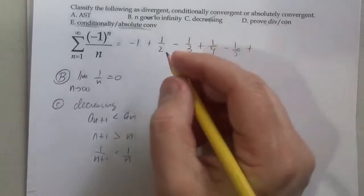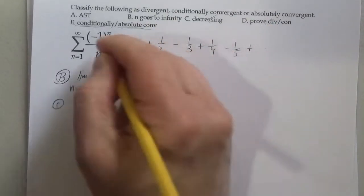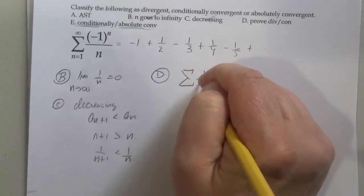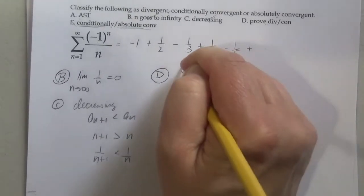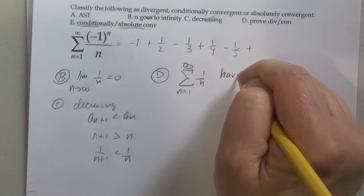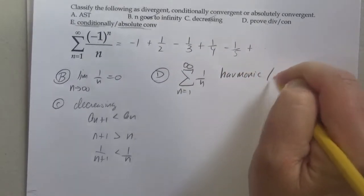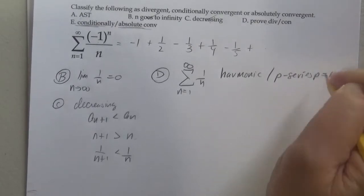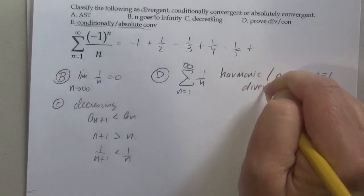Prove divergence or convergence of the original series without the negative 1. So what's up with this series, n equals 1 to infinity? This is the harmonic slash P series with P equals 1. It's divergent.